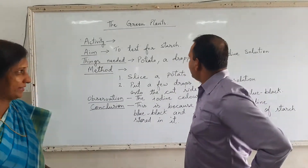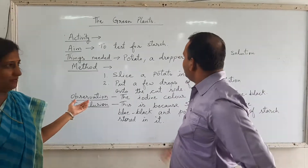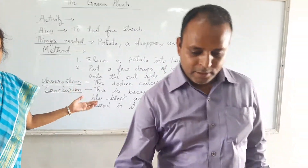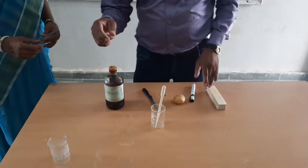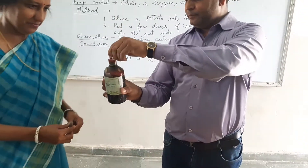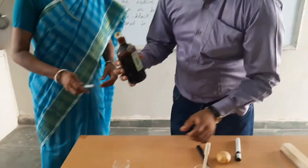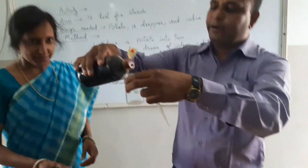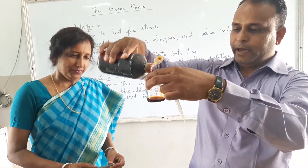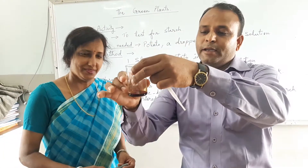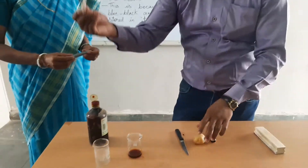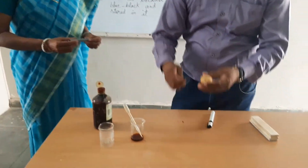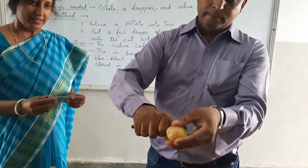The activity involves potato and starch. So let's see. This is iodine solution — take iodine solution in a beaker. The iodine color is brown-yellow. This is the dropper.